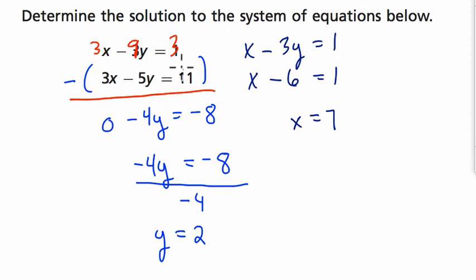This just means that these two equations, if we graph them, would meet at the point 7 comma 2, where x is 7 and y is 2.